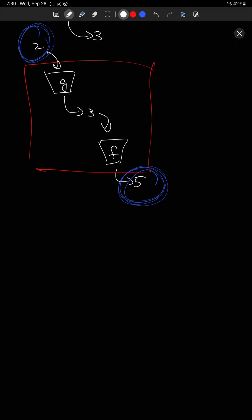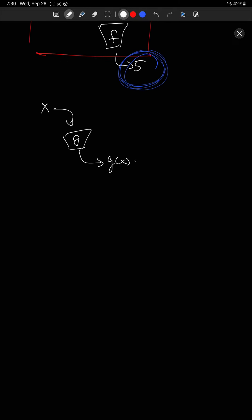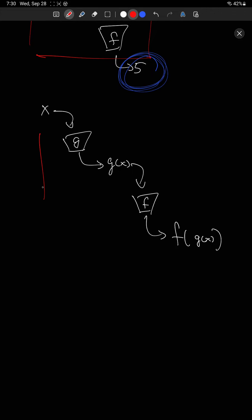In terms of a more general picture, if I put x into g, then what's going to come out is g of x. Now I take that g of x and I put that into f. What's going to come out? Well, f of that — that is g of x. So this new function has x going in and f of g of x coming out.